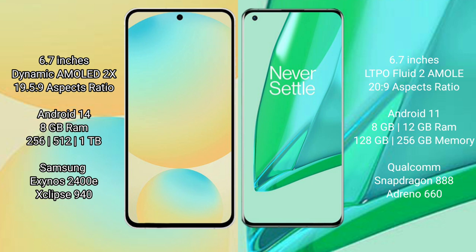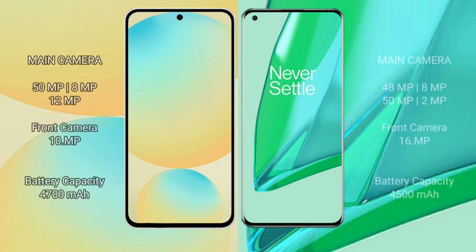OnePlus 9 Pro comes with 8GB or 12GB RAM and 128GB or 256GB internal storage, powered by the Qualcomm Snapdragon 888 processor. Samsung Galaxy S24 FE features a triple rear camera setup: 50MP plus 8MP plus 12MP, with a 10MP front camera. OnePlus 9 Pro features a quad rear camera setup: 48MP plus 8MP plus 15MP plus 2MP.